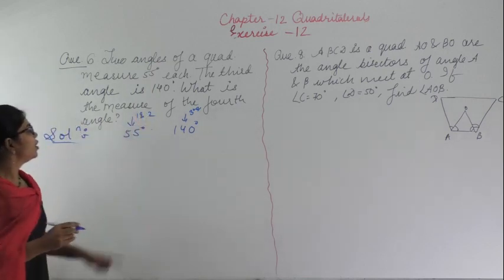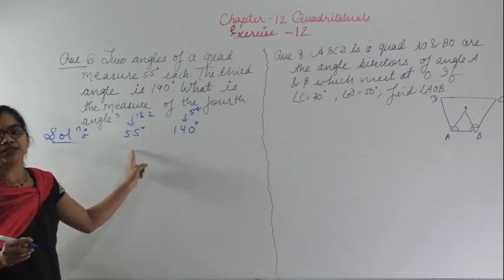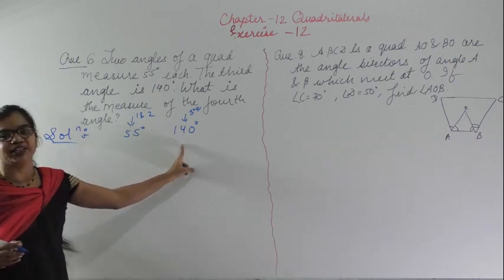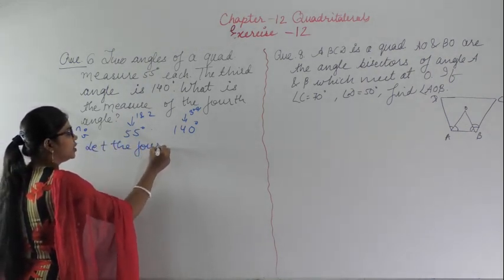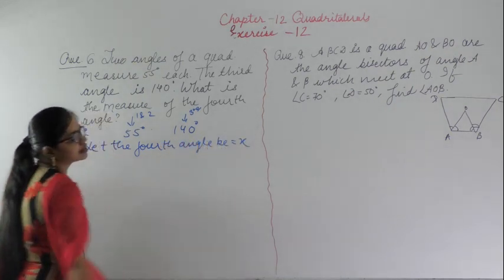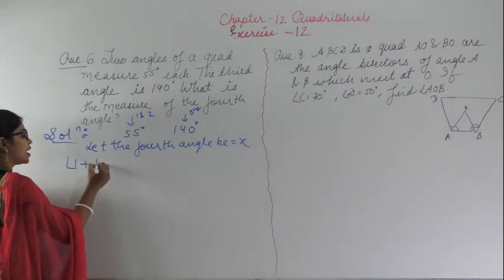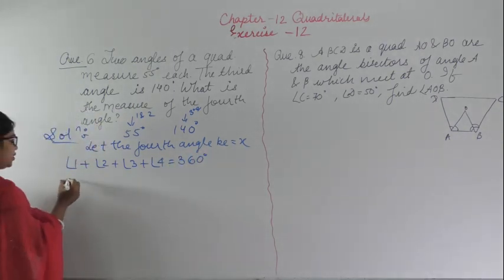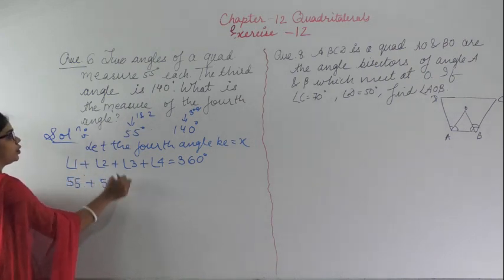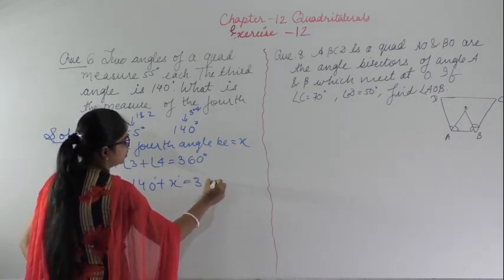Angle 1 and angle 2 are both 55 degrees each, and the third angle is 140 degrees. We let the fourth angle be x. We know the sum of all angles in a quadrilateral is 360 degrees, so angle 1 plus angle 2 plus angle 3 plus angle 4 equals 360 degrees. That is 55 plus 55 plus 140 plus x equals 360 degrees.